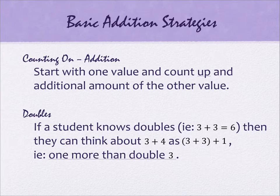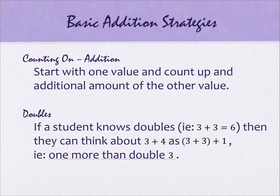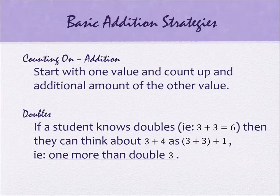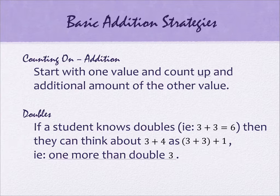The first strategy is called counting on, used with addition. You start with one of the values you're adding together, then count up the additional amount of the other value. So for 3 plus 7, you'd start with 7 and go 8, 9, 10 — counting up the last 3. The number you end on is your answer. It's a very common one.